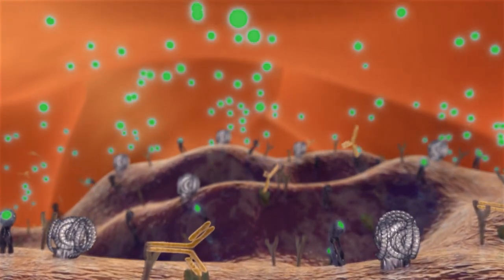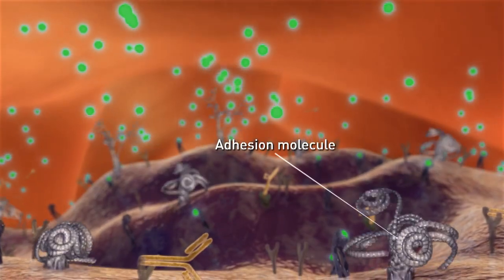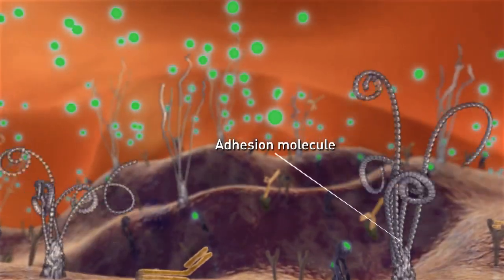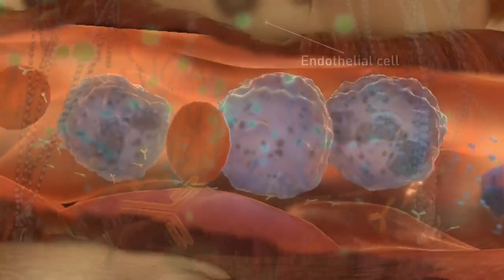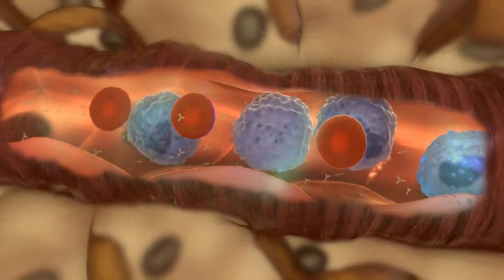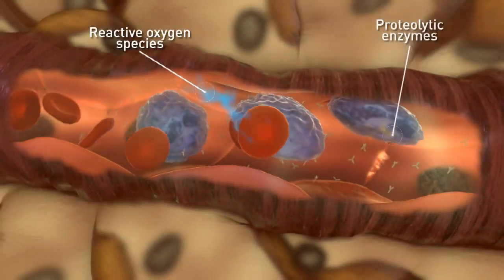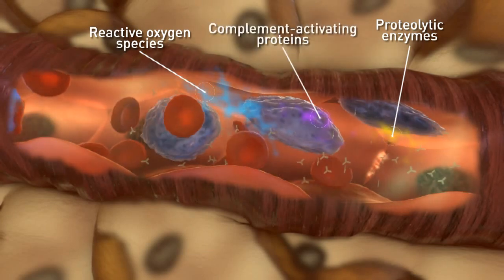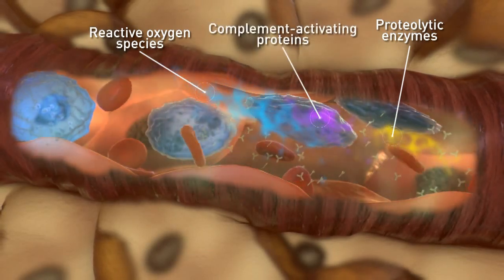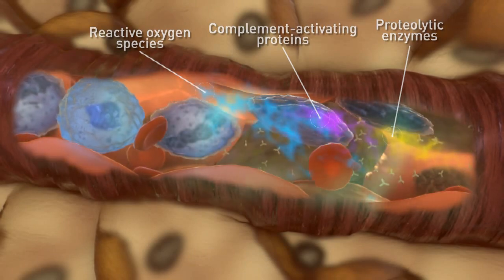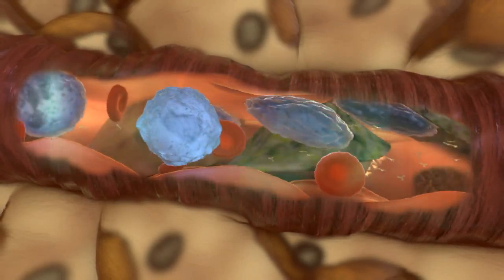Interaction of ANCAs with cell surface antigens and with Fc receptors further primes neutrophils. The conformation of neutrophil adhesion molecules changes, causing neutrophils to firmly adhere to the endothelium. Reactive oxygen species, proteolytic enzymes, and factors that activate the alternative complement pathway are released, causing damage to the endothelium and vascular wall.